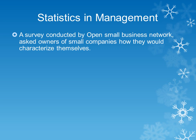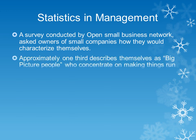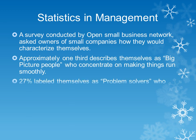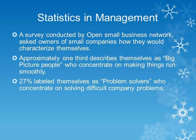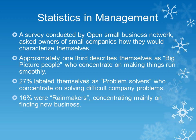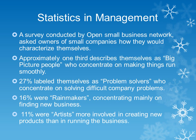Now, statistics in management. A survey was conducted by the Small Business Network to ask owners of small companies how they would characterize themselves. Approximately one third of business owners described themselves as big picture people who concentrate on making things run smoothly. 27% labelled themselves as problem solvers who concentrate on solving difficult company problems. 16% were trail makers concentrating mainly on finding new business. 11% were artists more involved in creating new products than in running the business.